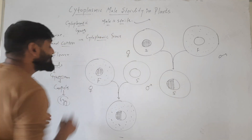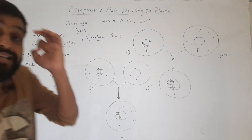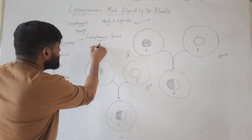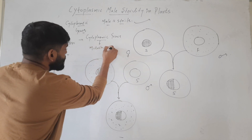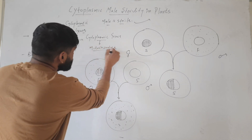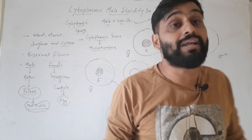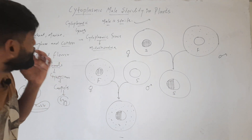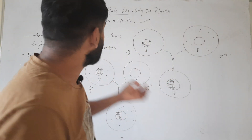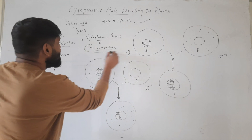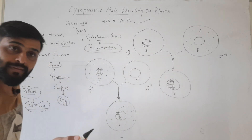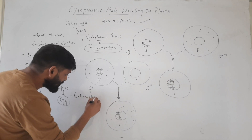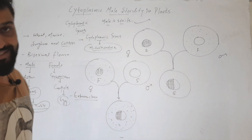This occurs due to cytoplasmic genes — means genes present in the cytoplasm. And where, particularly in the cytoplasm? In the mitochondria. So, genes that are present on mitochondria are responsible for male sterility in plants. If the genes are present on mitochondria, which means inheritance will be extranuclear.